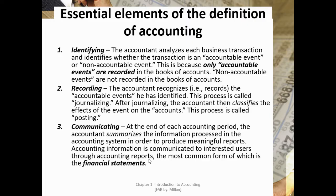Another essential element is recording. In recording, the accountant recognizes or records the identified accountable events. This process is called journalizing. After journalizing, the accountant then classifies the effects of the event on the accounts — this process is called posting. An account is the basic storage of information in accounting; for example, cash, land, sales, etc.